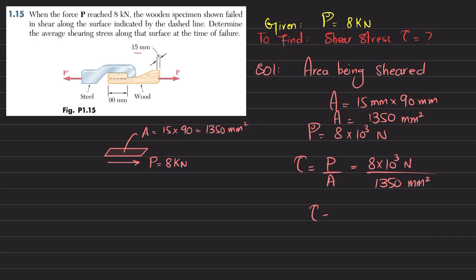So you will get 5.93. Let me clarify one more thing: this is 8 × 10³ Newton, and if you convert it into meters, 1350 × 10⁻⁶ square meter. So the shearing stress comes out to be 5.39.